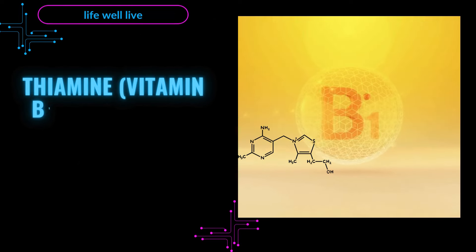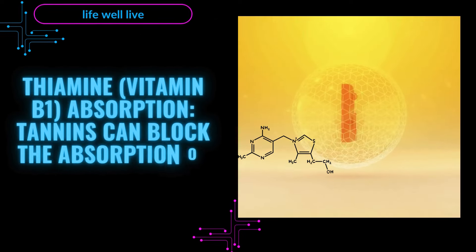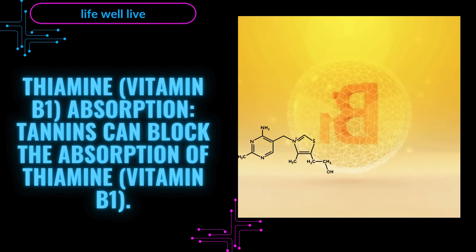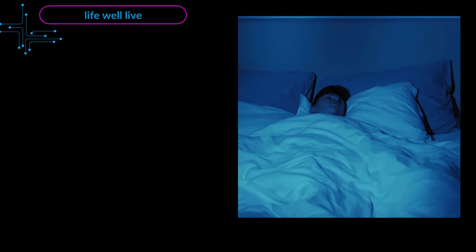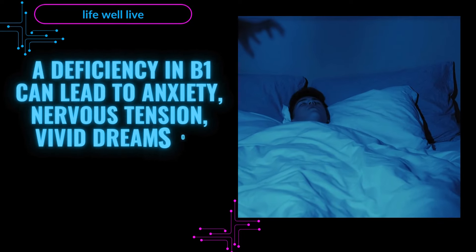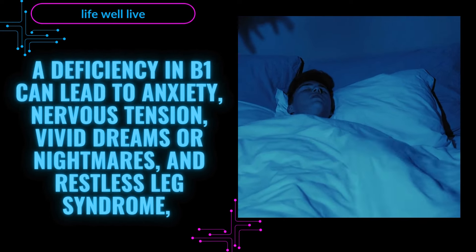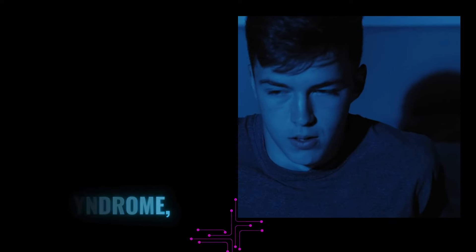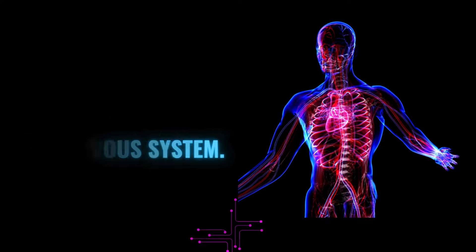Thiamine, vitamin B1 absorption. Tannins can block the absorption of thiamine, vitamin B1. A deficiency in B1 can lead to anxiety, nervous tension, vivid dreams or nightmares, and restless leg syndrome, all of which impact the nervous system.